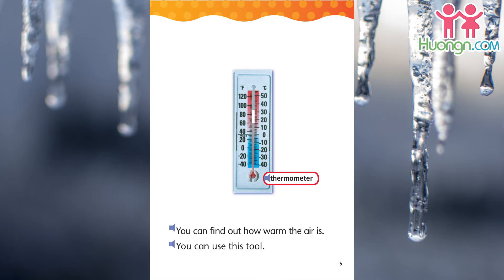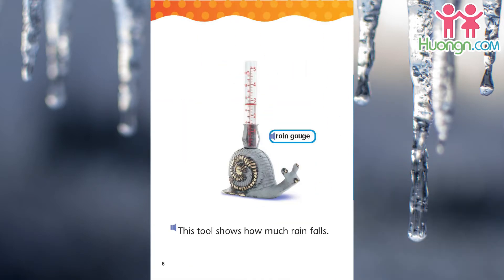You can find out how warm the air is. You can use this tool. Thermometer. This tool shows how much rain falls. Rain gauge.